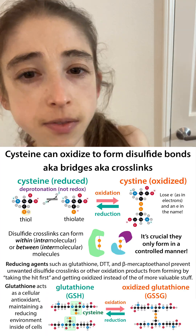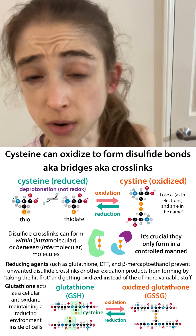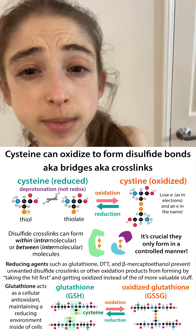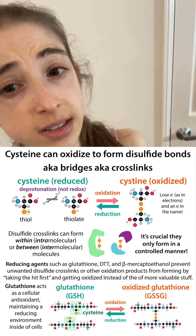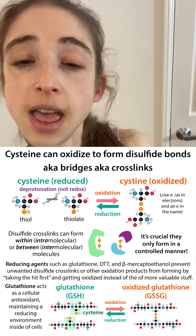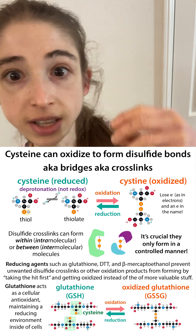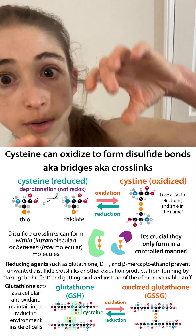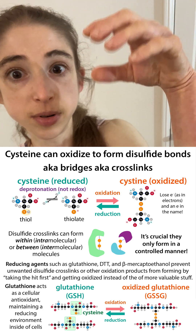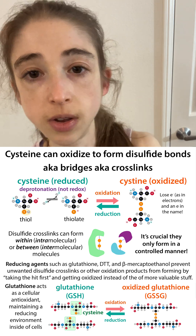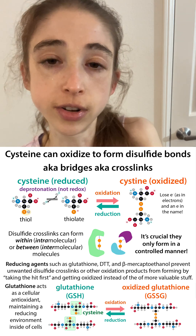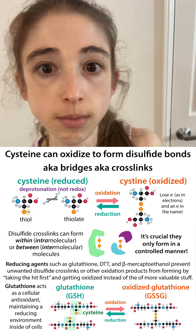Inside of our cells, however, most proteins don't have those cysteine crosslinks. You've got a reducing environment inside of your cells, thanks to things like glutathione, that makes it so that you don't get these crosslinks forming between the wrong parts of proteins or between different proteins. So the crosslinks are actually introduced in a very controlled manner.